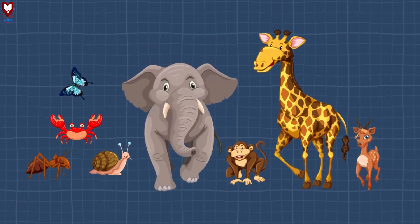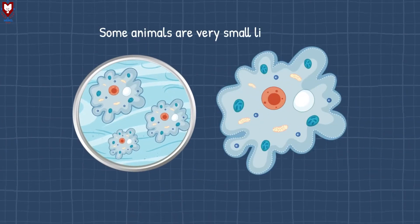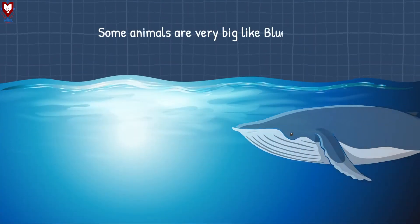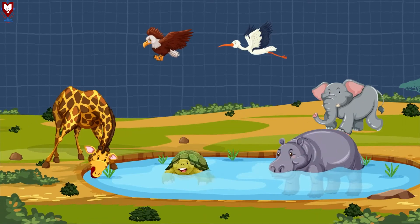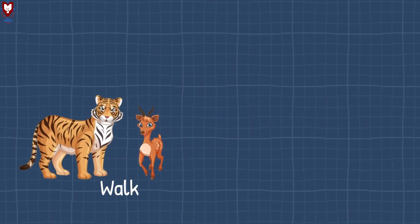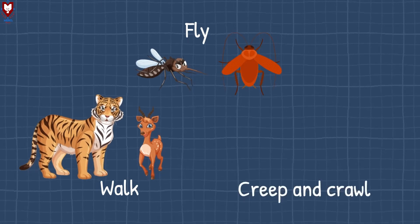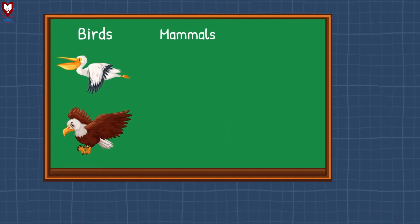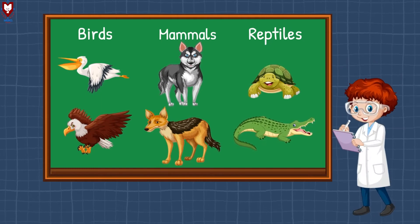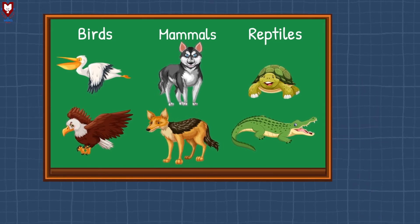Animal species come in different shapes and sizes. Some animals are very small, like amoeba, and some animals are very big, like the blue whale. Animals like the snake and crocodile have similar features and differences, so scientists have classified them into different categories.